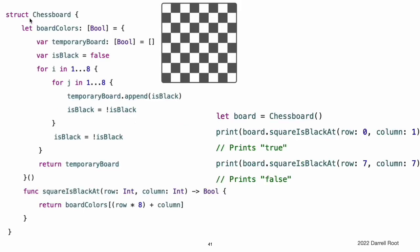This example defines a structure called Chessboard, which models a board for a game of chess. Chess is played on an 8x8 board with alternating black and white squares. To represent this game board, the Chessboard structure has a single property called boardColors, which is an array of 64 Bool values. A value of true in the array represents a black square, and a value of false represents a white square. The first item in the array represents the top left square on the board, and the last item represents the bottom right square.